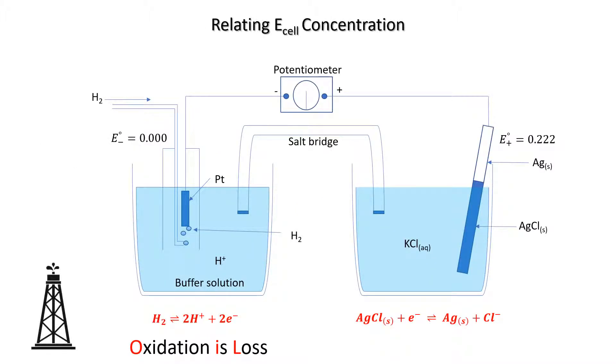Hydrogen gas is losing two electrons to become two protons, so it is becoming oxidized. Those electrons are flowing through the potentiometer to the silver electrode and reducing silver chloride to solid silver and releasing a chloride ion into the potassium chloride solution. So red cat, the cathode is the silver-silver chloride electrode and the anode is the platinum hydrogen electrode.